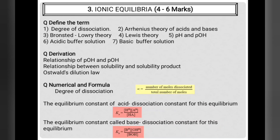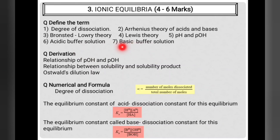The third topic is ionic equilibrium, with 4–6 marks weightage. Important definitions include degree of dissociation (alpha), Arrhenius theory, Brønsted-Lowry theory, Lewis theory definitions of acid and base, pH, pOH, acidic buffer solution, and basic buffer solution. The relationship between pH and pOH is an important derivation from this topic.